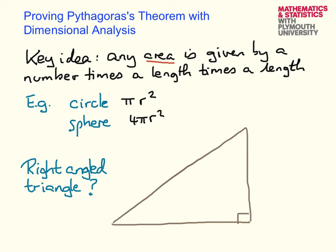In this video, I want to use dimensional analysis to prove Pythagoras' theorem. Dimensional analysis is one of my favourite techniques — it really helps me to spot mistakes and to better understand lots of formulae. The key idea, in a simplified version, is that any area is given by a number times a length times a length. In terms of units, an area has units of metres squared, so it will always involve a metre times a metre.